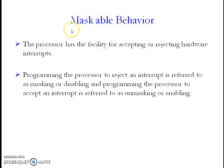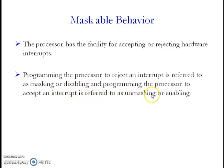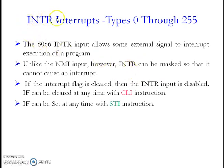The processor has the facility for accepting or rejecting hardware interrupts. Programming the processor to reject an interrupt is referred to as masking or disabling, and programming the processor to accept an interrupt is referred to as unmasking or enabling. If you mask the interrupt source, you can call it maskable behavior. In hardware interrupts you have two types: INTR and NMI.